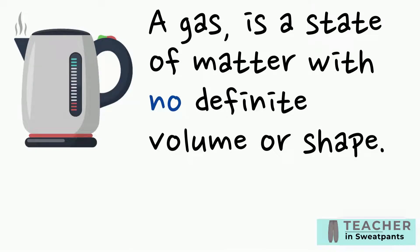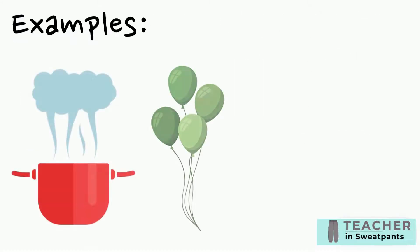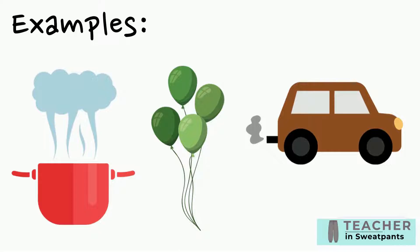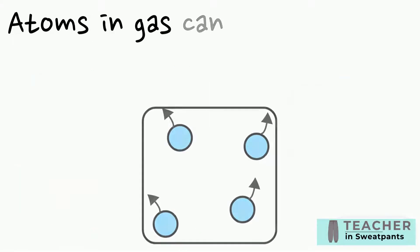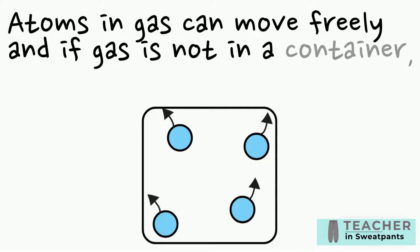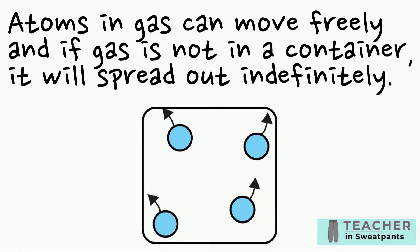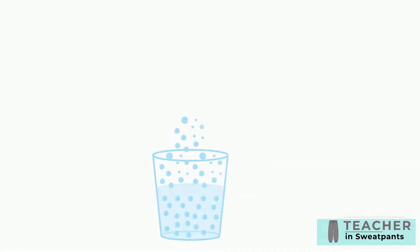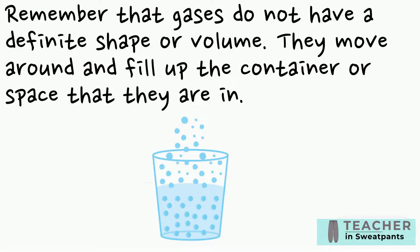A gas is a state of matter with no definite volume or shape. Examples of gas include water vapor, helium, and carbon monoxide. Atoms in a gas can move freely, and if gas is not in a container it will spread out indefinitely. Gases do not have a definite shape or volume — they move around and fill up the container or space that they are in.